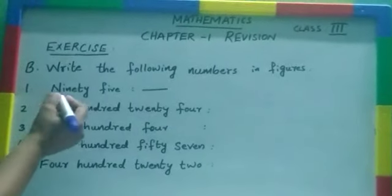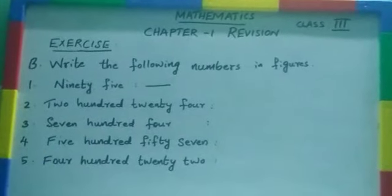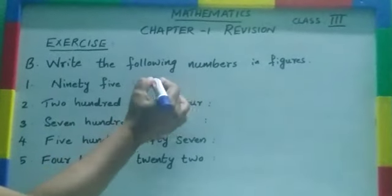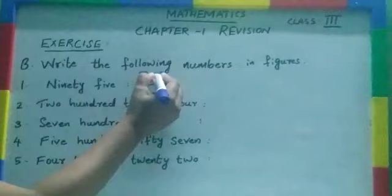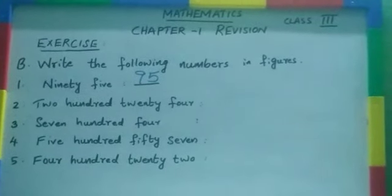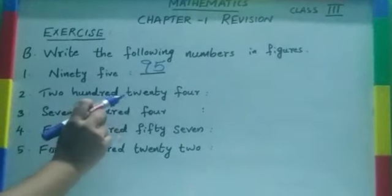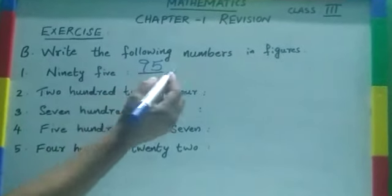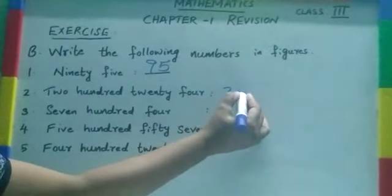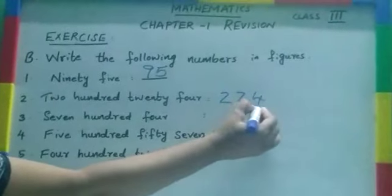First one, 95. So you need to write the number with figure. 95. Next, can you read with me? 224. How to write? 224.